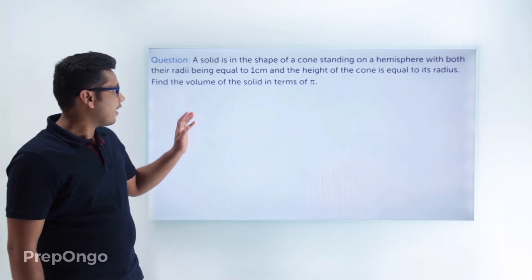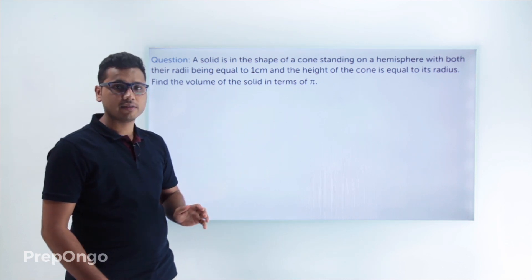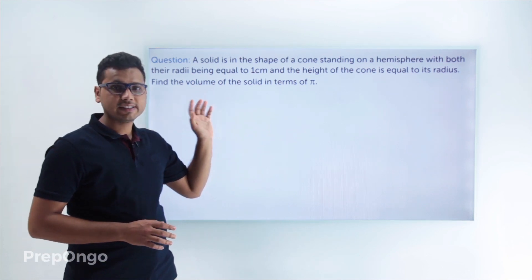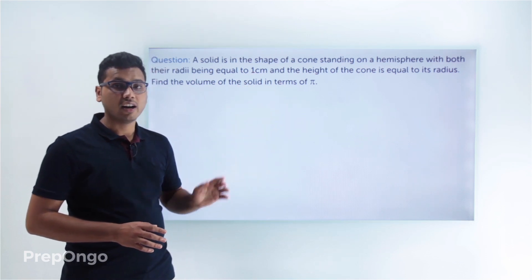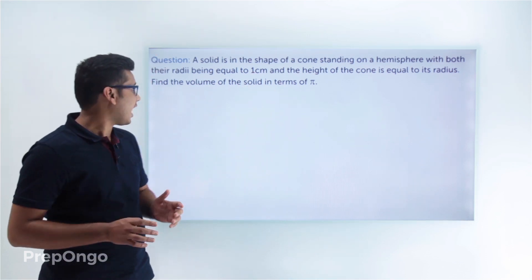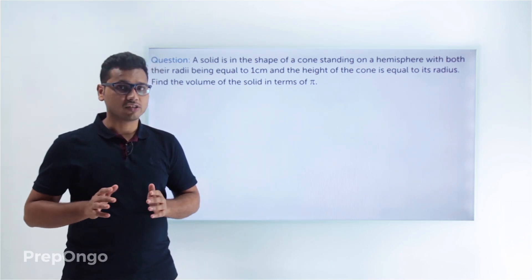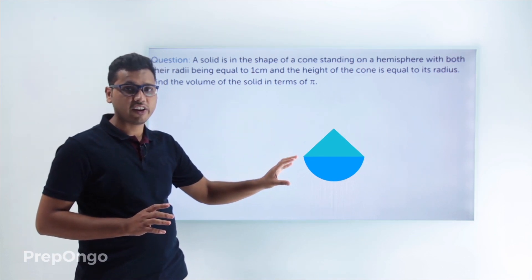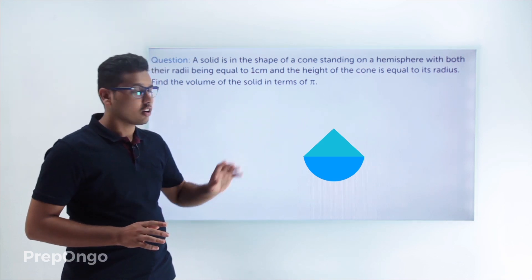Now we'll look at some examples to understand how we calculate the volume of a solid by combination of different solids. The first example says we have a solid in the shape of a cone standing on a hemisphere, and both their radii are equal to 1 centimeter. The height of the cone is also equal to its radius, so the height is also 1 centimeter. We have to calculate the volume of the solid in terms of pi.